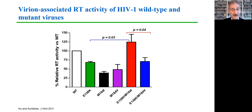This was also seen at the level of reverse transcriptase activity. Looking at RT activity in viral supernatants, there was greater activity when the 138K and 184I were present together as compared to the 138K with the 184V mutation.